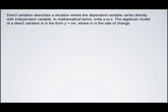Direct Variation describes a situation where the dependent variable varies directly with the independent variable. In mathematical terms, we write Y varies directly with X. That symbol is the Greek letter alpha. It means varies directly.